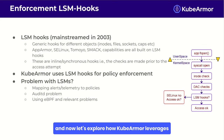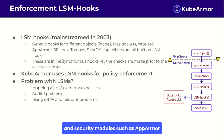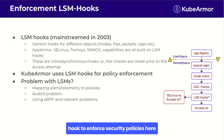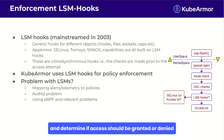KubeArmor leverages LSM hooks for policy enforcement in Kubernetes environments. LSM hooks provide general records for various objects like nodes, files, and sockets, and security models such as AppArmor, SELinux, Tomoyo, and Smack utilize these hooks. These hooks perform inline and synchronous checks before access attempts. KubeArmor integrates with LSM hooks to enforce security policies — an application calling fopen triggers a series of checks, and KubeArmor uses LSM hooks to enforce SELinux policies and determine if access should be granted or denied.